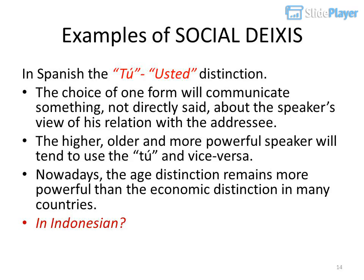Examples of social deixis: In Spanish, the 'tu/usted' distinction — the choice of one form will communicate something not directly said about the speaker's view of his relation with the addressee. The higher, older, and more powerful speaker will tend to use 'tu' and vice versa. Nowadays the age distinction remains more powerful than the economic distinction in many countries.